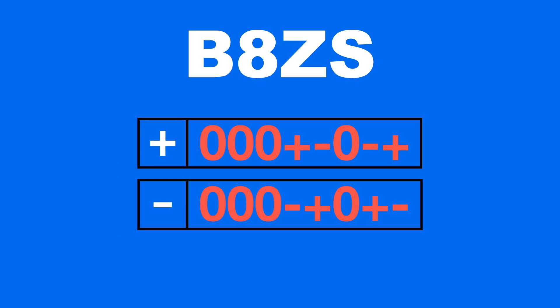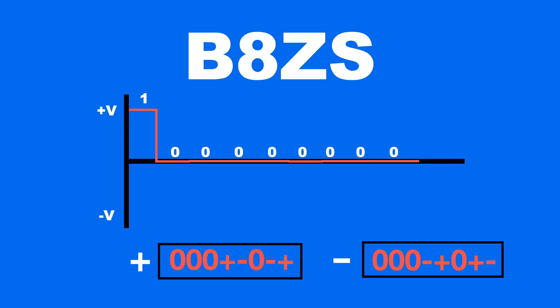B8ZS uses two substitution rules based on the previous one bit's polarity. If we have 8 zeros in a row and the last one bit was positive, then B8ZS replaces the zeros with this pattern.